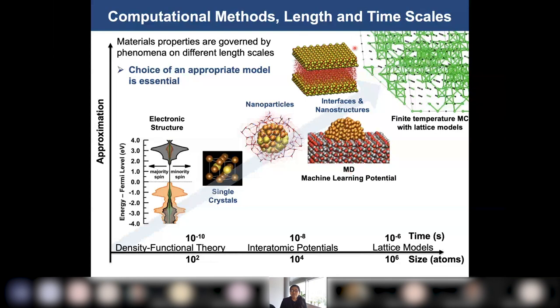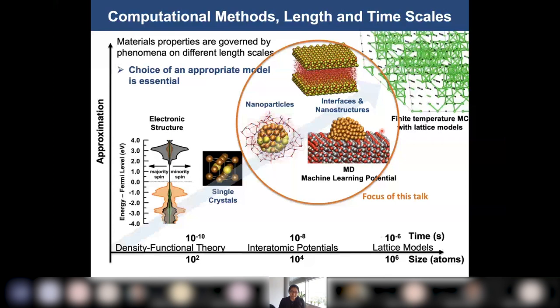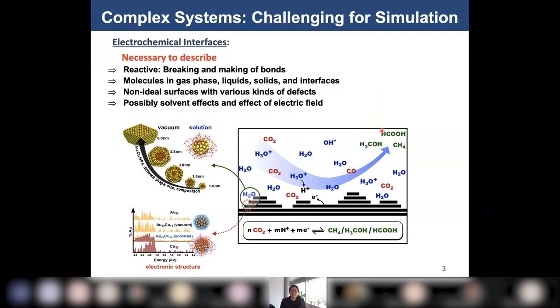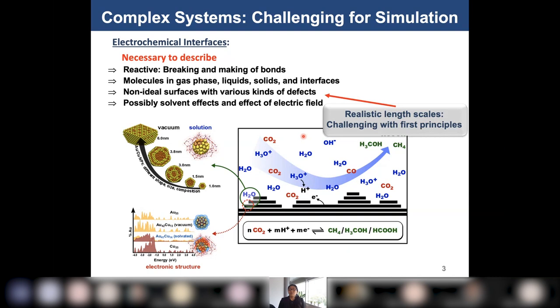For larger scales, we apply lattice models used in finite-temperature Monte Carlo simulations. In this talk I will focus on the intermediate scales and machine learning potentials. Many energy conversion processes are based on reactions at interfaces that can be very complex and challenging for simulations. The cartoon I draw here shows electrocatalytic CO2 reduction. To model such a complex process, we have to find models that can describe complicated phases such as liquid, solid, and interfaces. It is difficult with DFT because of the requirement of very large length scales and long time scales.